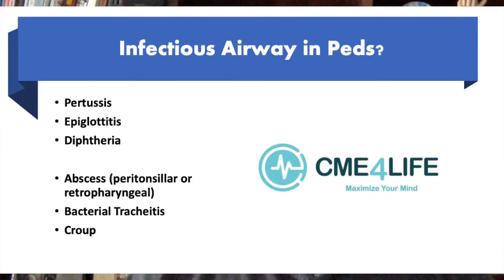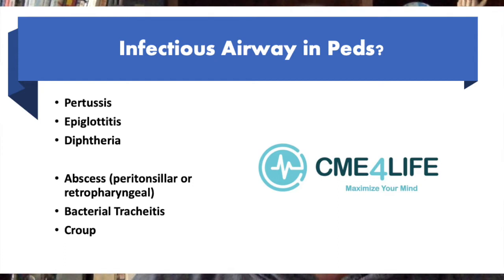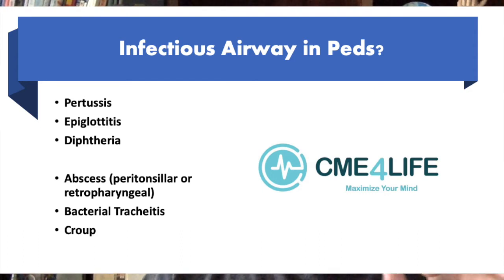E — is it epiglottitis? Are they immunized? D — we don't see much in the United States, but diphtheria; we've got to think about it, keep it on the differential diagnosis. Then A is abscess — peritonsillar abscess. B is bacterial tracheitis, and C is croup.